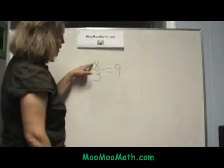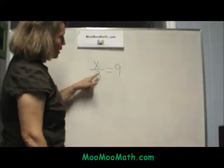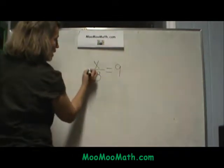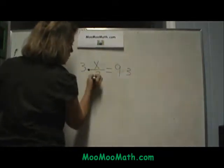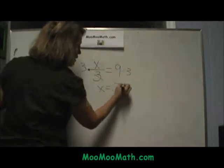Here's our equation: x divided by 3 is equal to 9. To solve this in fast motion, I multiply both sides by 3. So x is equal to 27.